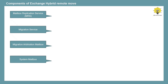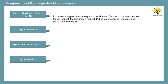There are a few components and services that play an important role in Exchange Hybrid Remote Move. The first is Microsoft Exchange Mailbox Replication Service, or MRS. MRS is responsible for processing all types of move requests, whether local move or remote move. MRS proxy handles sync requests for IMAP migration, merge requests for cut-over or staged migration, mailbox import requests for Office 365 PST import service, public folder migration requests, and mailbox restore requests. This mailbox replication service is available in both on-premise and Exchange Online.